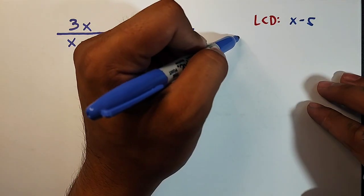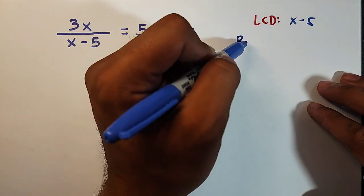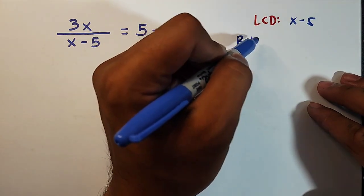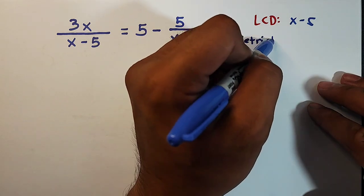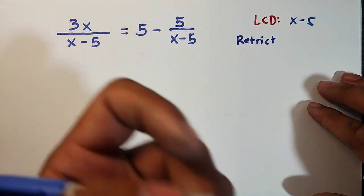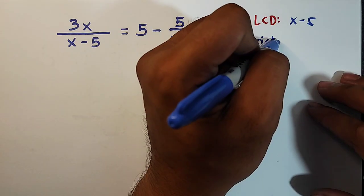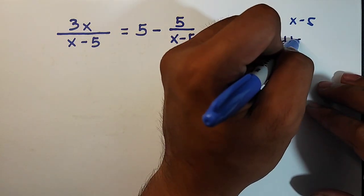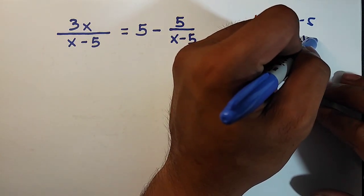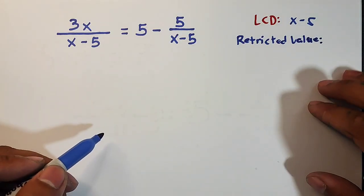Then after that, we also need to know your restricted value. So many of us, many of our viewers are asking what is RV. So it is restricted value.